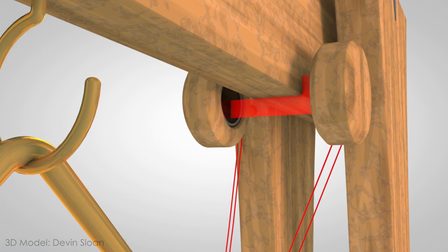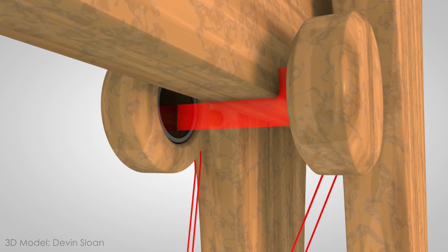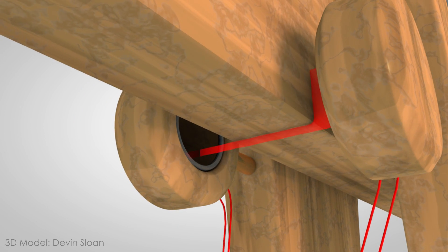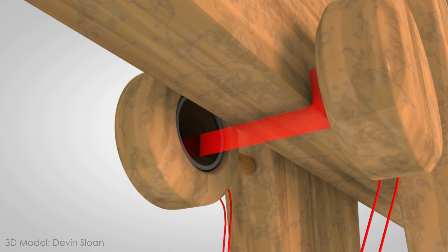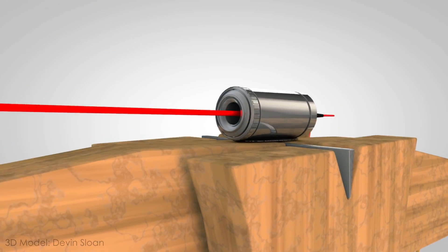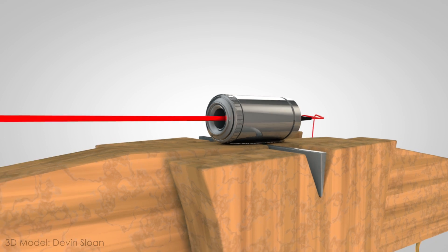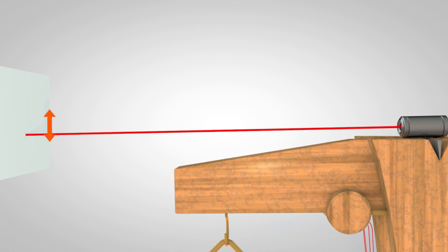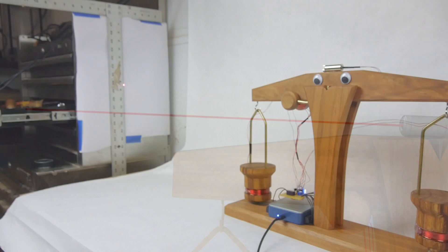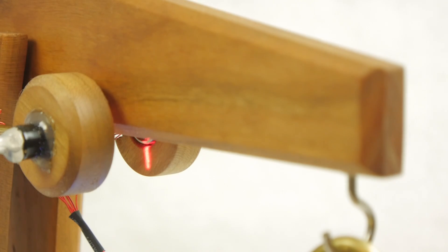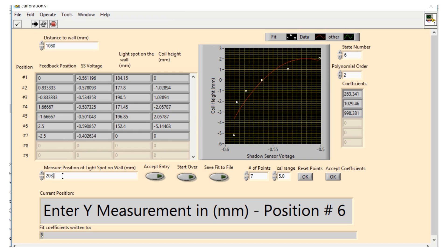To measure the position of the arm, the watt balance uses a shadow sensor, which consists of a photodiode and a laser line. As the balance moves, it gradually obstructs the path of the laser, changing the intensity of the light hitting the sensor. Another laser on top of the arm provides an optical lever for calibration. A small movement of the arm creates a large movement of the laser dot on an adjacent wall. By measuring the distance the optical lever moves for a few different arm positions, and comparing those to the corresponding readings from the shadow sensor, we can calibrate the watt balance so it knows the precise position of its arm.